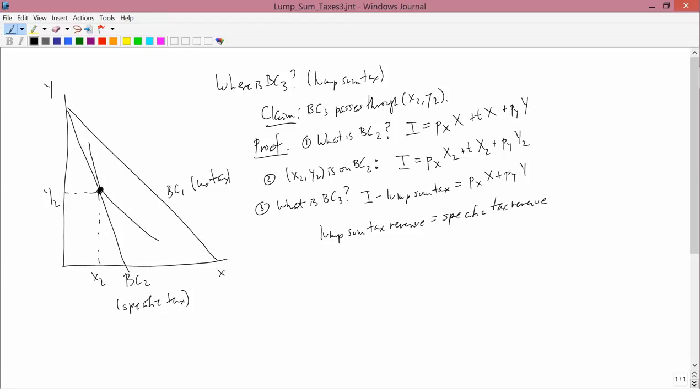Now, we know an equation for the specific tax revenue in this case. If a specific tax is imposed, the consumer is going to go to X2, Y2, and so he's going to buy X2 units of good X, and we know the amount of tax he's going to pay. He's going to pay T times X2 in taxes under the specific tax. So, the specific tax revenue is T times X2, and because we want the lump sum tax revenue to equal the specific tax revenue, then that means that the lump sum tax revenue is also going to have to equal X2.